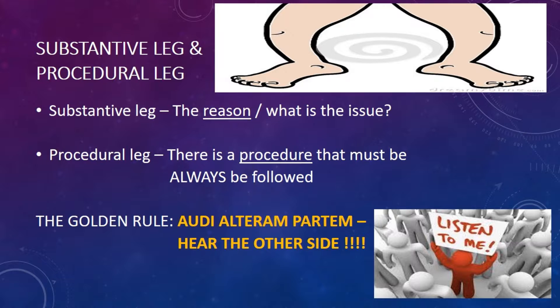The procedural leg — regardless of which process you're embarking upon, there's always a procedural leg that has to be satisfied as well. You have to make sure you follow the correct procedure. The most fundamental mistake employers make is that they do not give employees an opportunity to speak. The most critical part of having a strong claim at the CCMA is giving your employee an opportunity to say what they want to say — in Latin terms, the Audi alteram partem: simply, hear the other side.